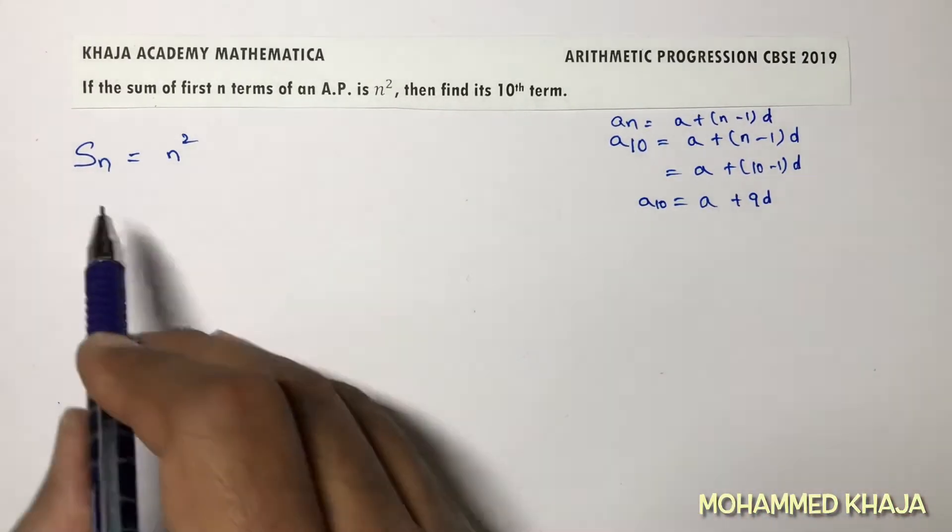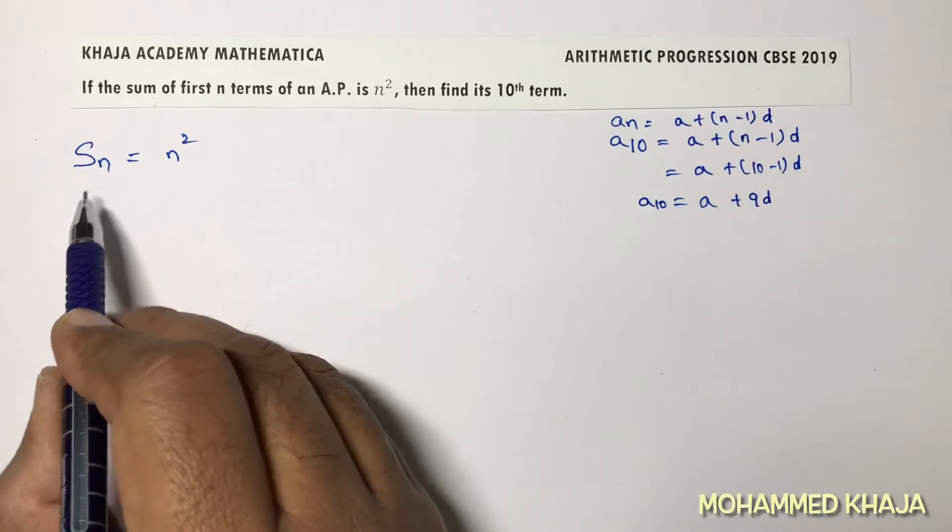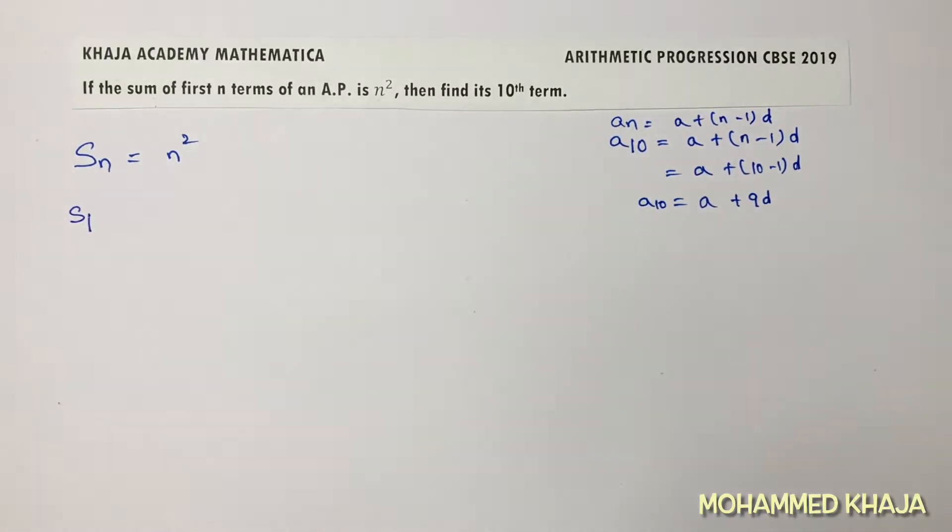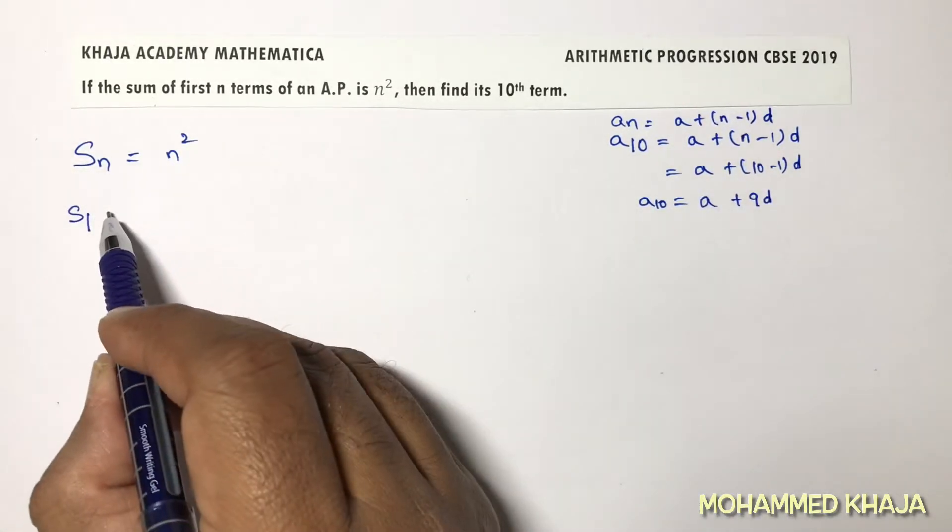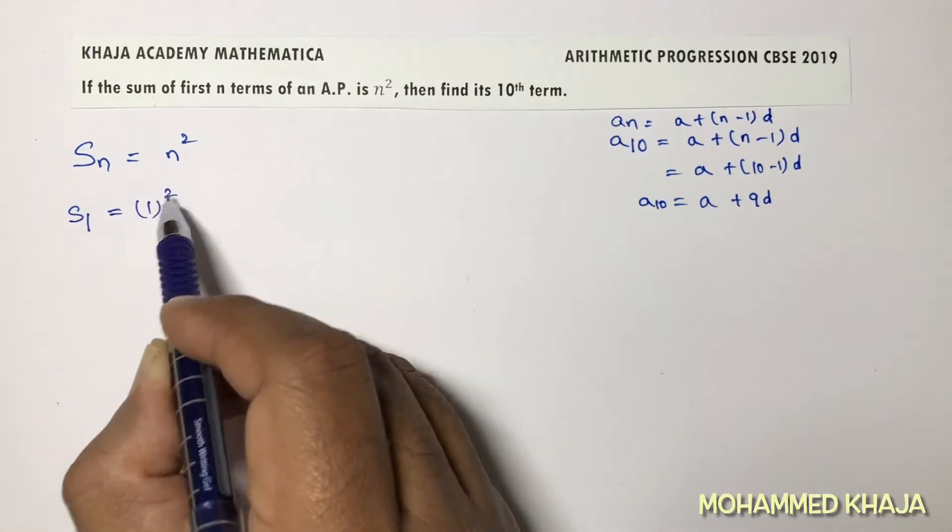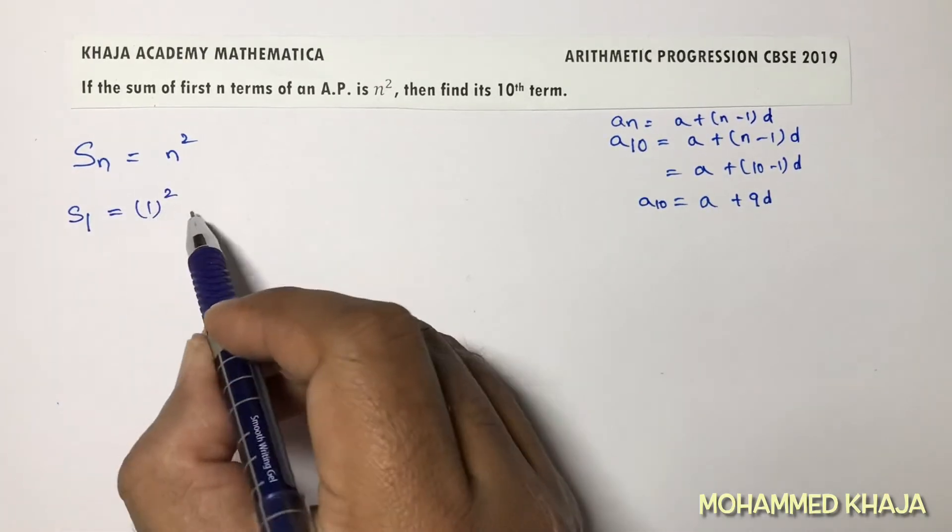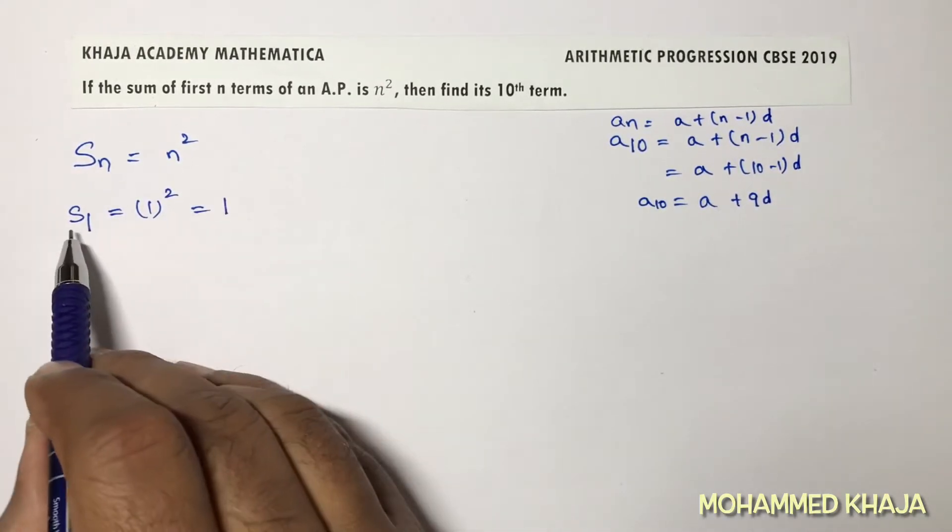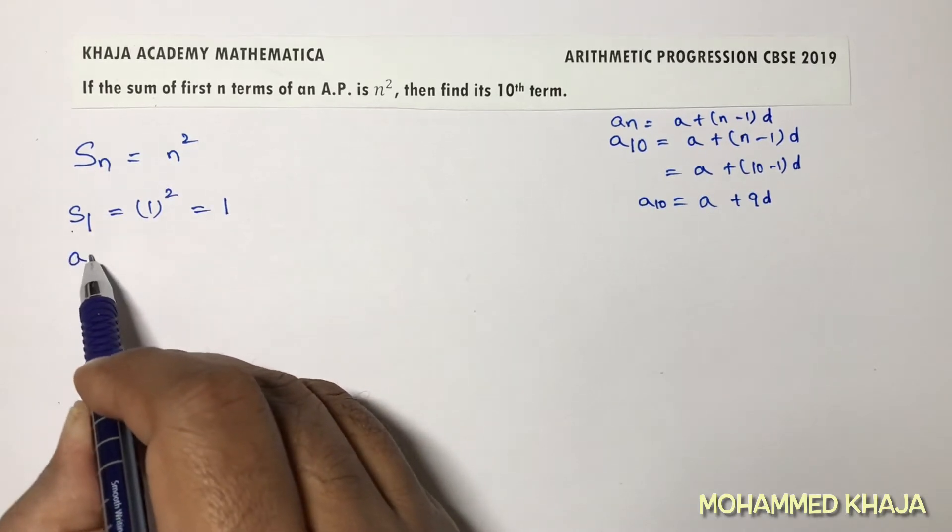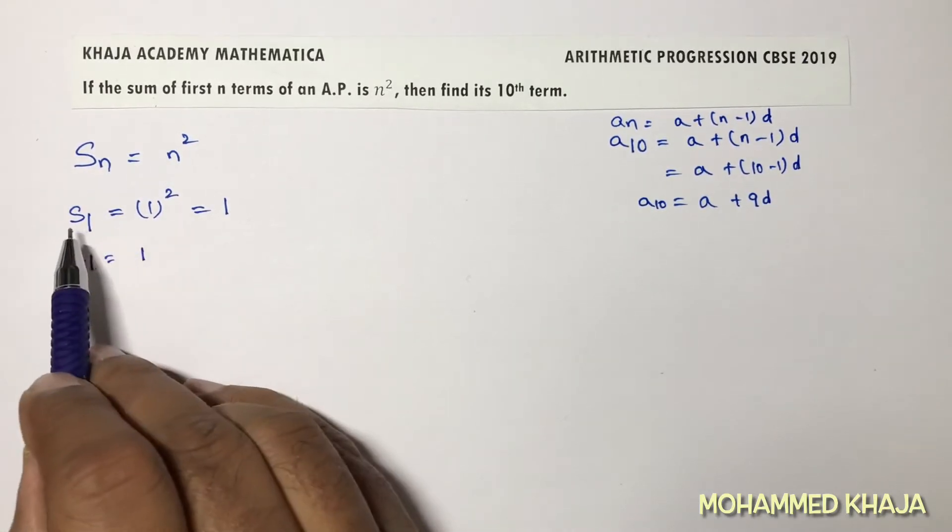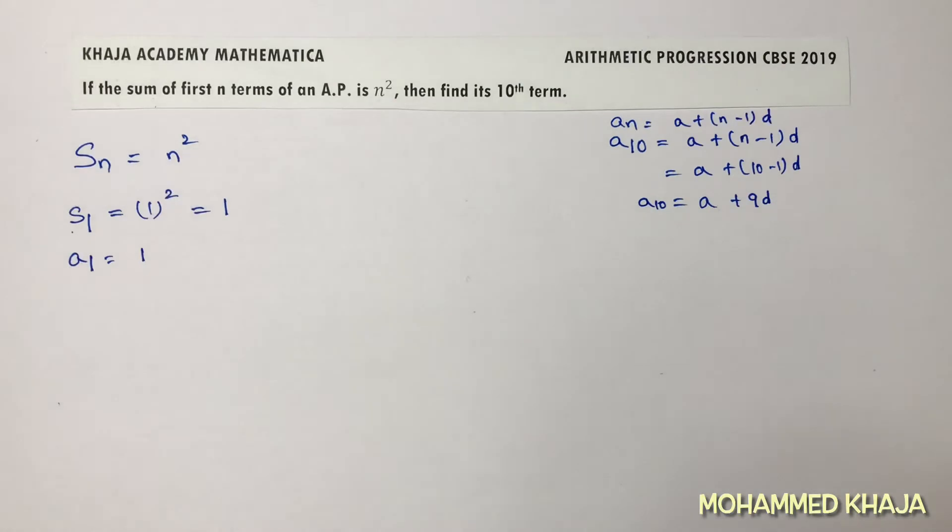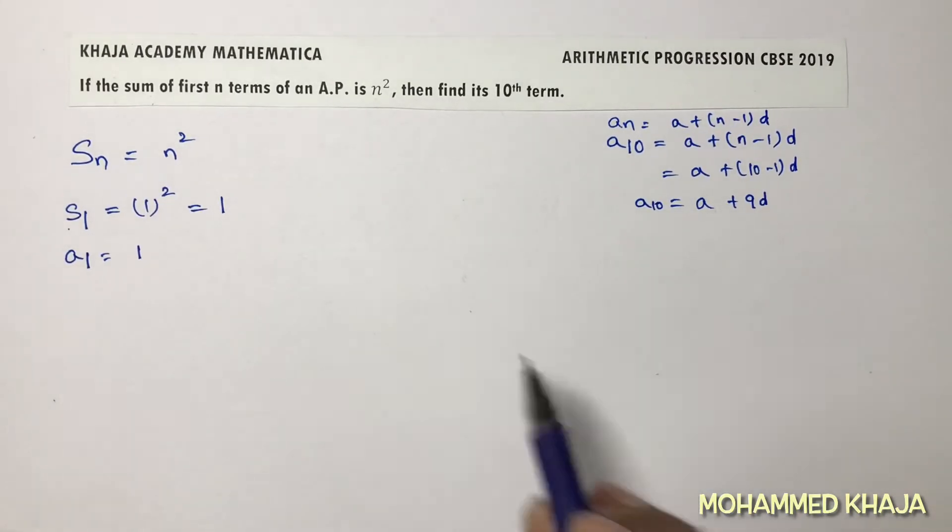Now here Sₙ is given, means sum of n terms. So first find S₁. S₁ is 1 square, so 1 square is 1. S₁ is a₁ because sum of one term is the first term.